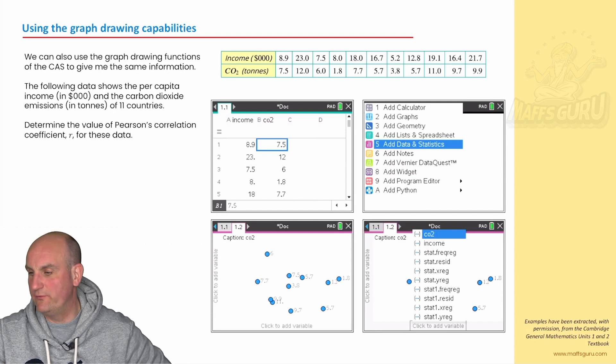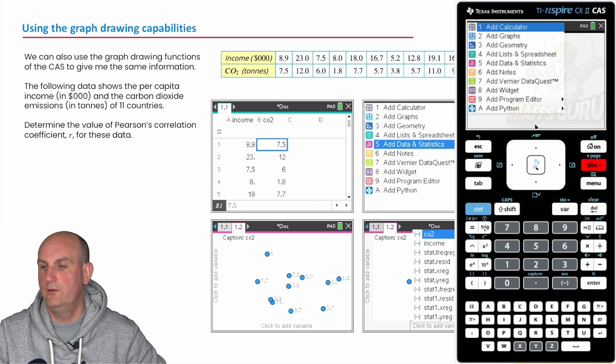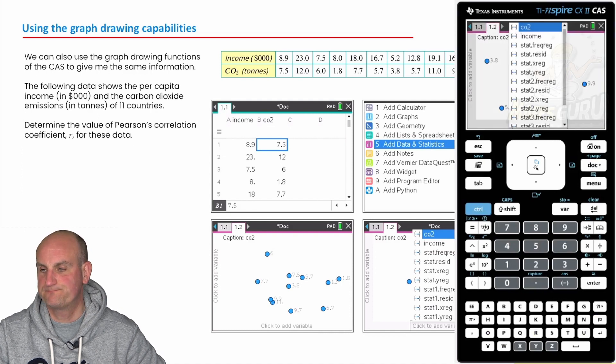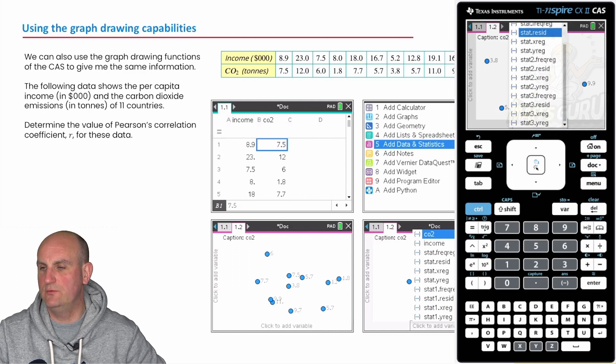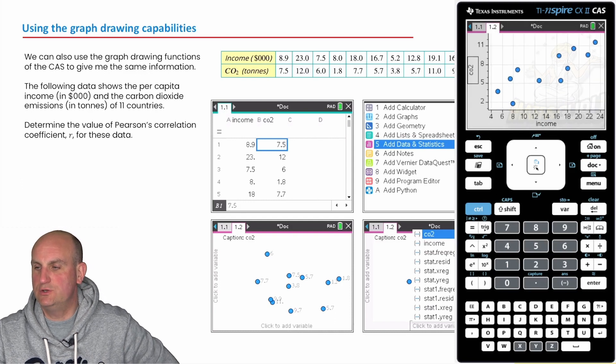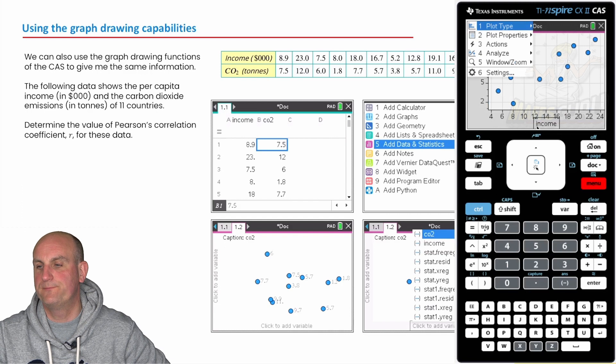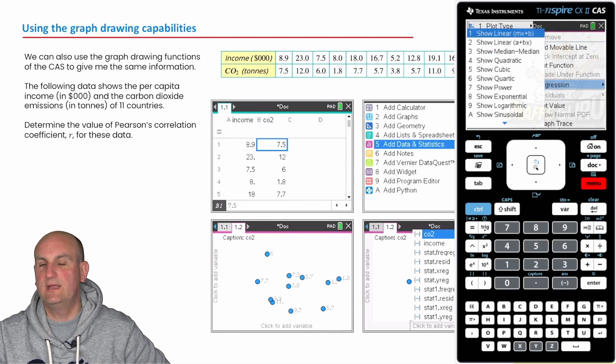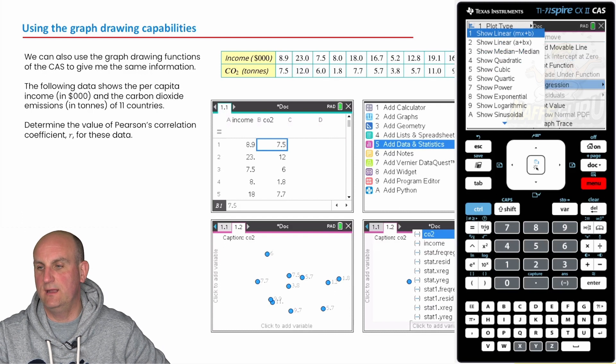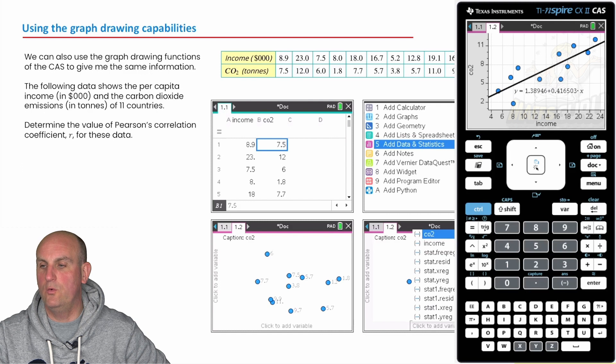So how do we do this using my calculator? Will it actually show me my equation? Well, using the example we've done before, and again, the notes are here for you, just in case you need to. Let's fire up my calculator. So I've already got that information in there, but I'm going to add a graph. So I'm going to do control doc, add data and statistics. My bottom there is equal to income, and up the side, CO2. There we go. Now, how do we actually get the calculator to do all the hard work for me? I'm going to go menu, analyze, regression, linear regression, least squares line. We've got here a plus bx. So do a plus bx. Oh my goodness. Before we go any further, there we go. It's done it for me. All the hard work is there.